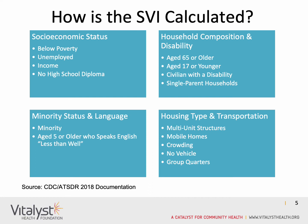For instance, for socioeconomic status, they look at how many households in a community are living below poverty, how many are unemployed, what is their income, or how many don't have a high school diploma.